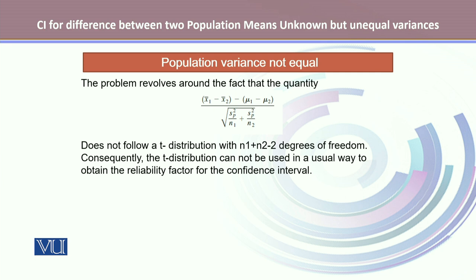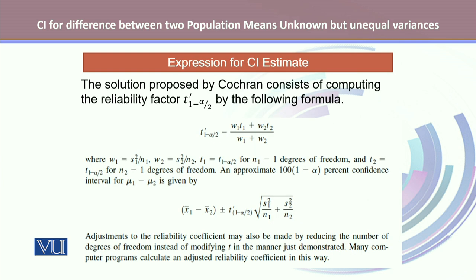Consequently, the t-distribution cannot be used in the usual way to obtain the reliability factor for the confidence interval. Hence, we end up using a more complex form for the reliability factor in this case. Here is the solution proposed by Cochrane that consists of computing the reliability factor t-prime 1 minus alpha over 2 by the following formula.